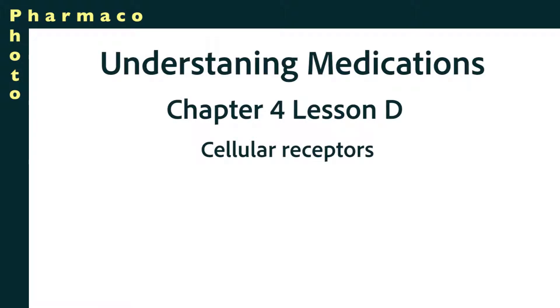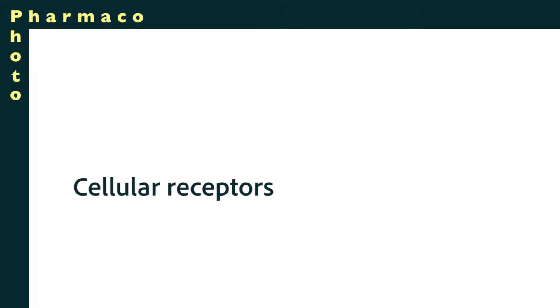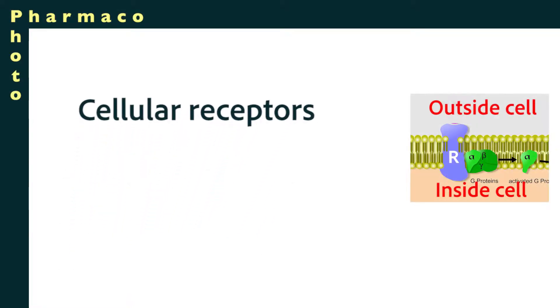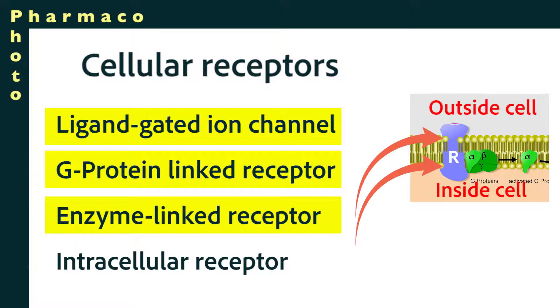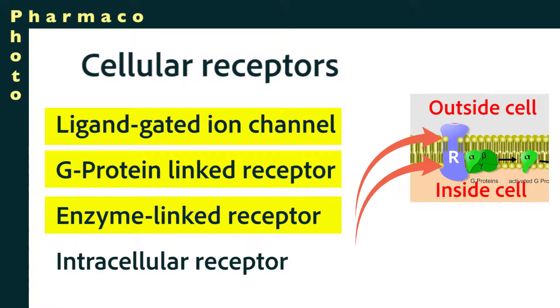Thanks for joining us as we get a quick look at the four types of cellular receptors. Three of the four types are on the cell surface. They're called transmembrane proteins, meaning that they span the whole distance of the phospholipid bilayer from the outside of the cell to the inside of the cell. Let's take a quick look at each one of those cellular receptors.